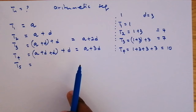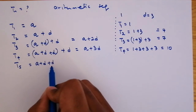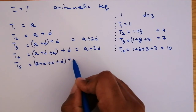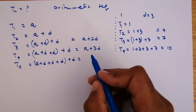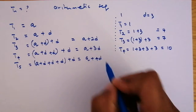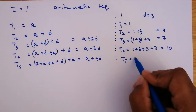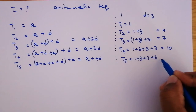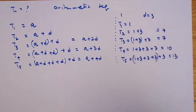The fifth term is going to be the fourth term plus 'd'. So it's a plus d (second term), plus d (third term), plus d (fourth term), plus d — that is the fifth term. Simplified, that is a plus 4d. And here, T5 equals 1 plus 3 plus 3 plus 3 plus 3, which is 13.